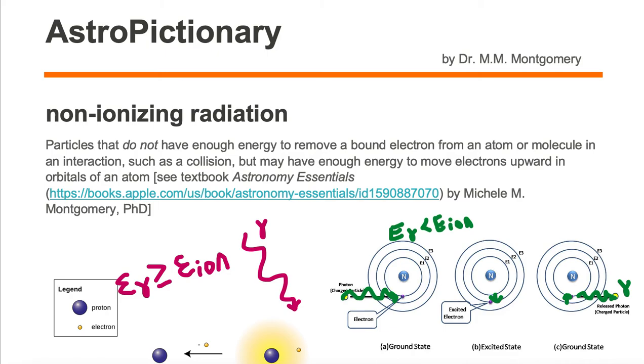Non-ionizing radiation is particles that do not have enough energy to remove a bound electron from an atom or molecule in an interaction, such as a collision, but may have enough energy to move electrons upward in orbitals of an atom.